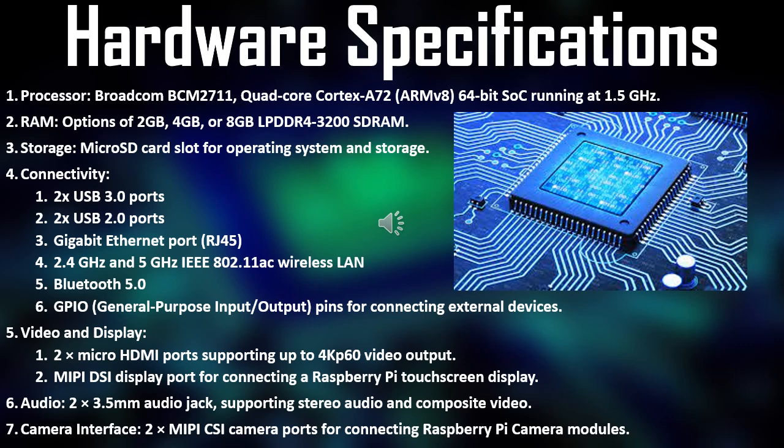Hi, I am Nihara Depe, roll number 31. I will cover hardware specifications. The processor powering Raspberry Pi is the Broadcom BCM2711, a quad-core Cortex-A72 64-bit SoC running at 1.5 GHz. This processor provides a balance between performance and power efficiency, enabling smooth multitasking and handling of computing tasks. The ARMv8 architecture ensures compatibility with a wide range of software and operating systems.